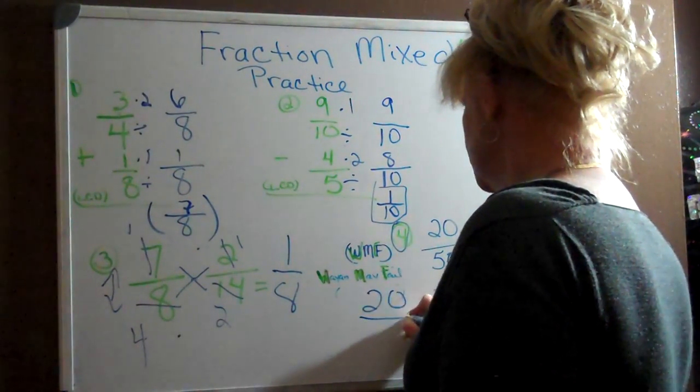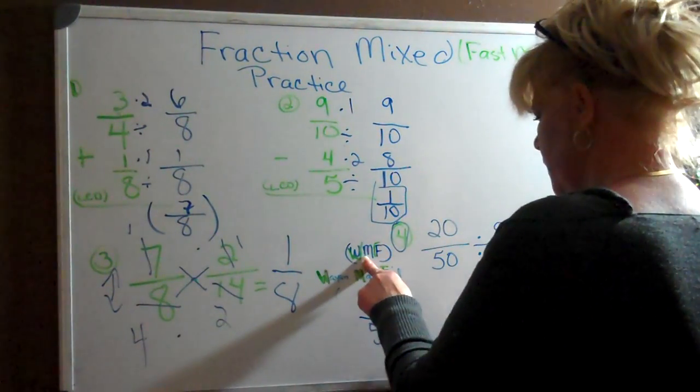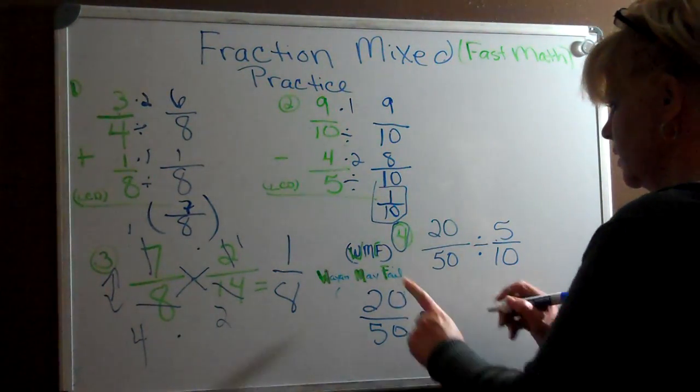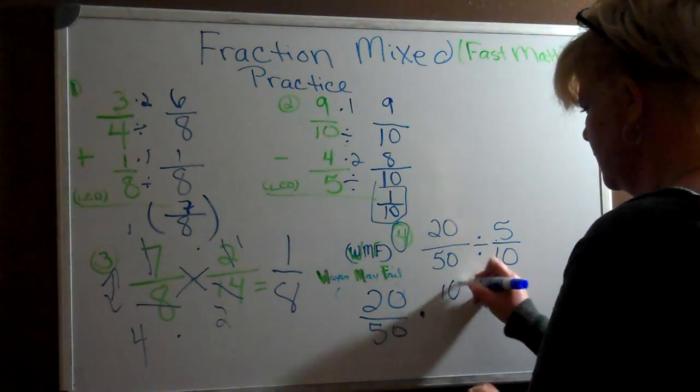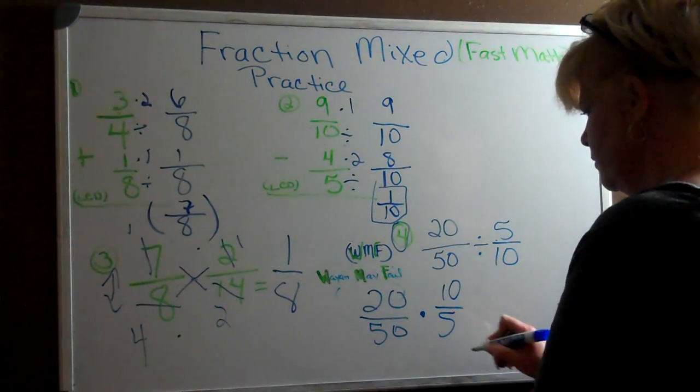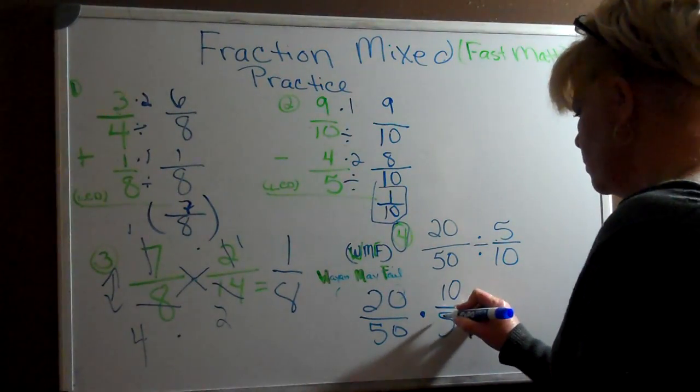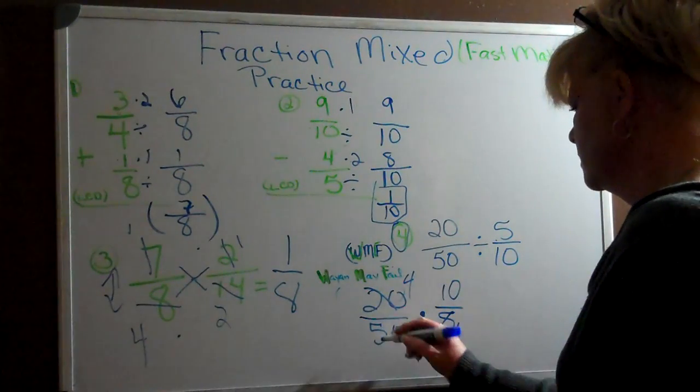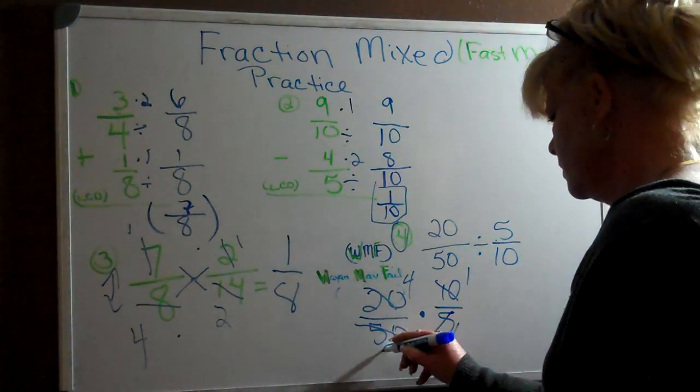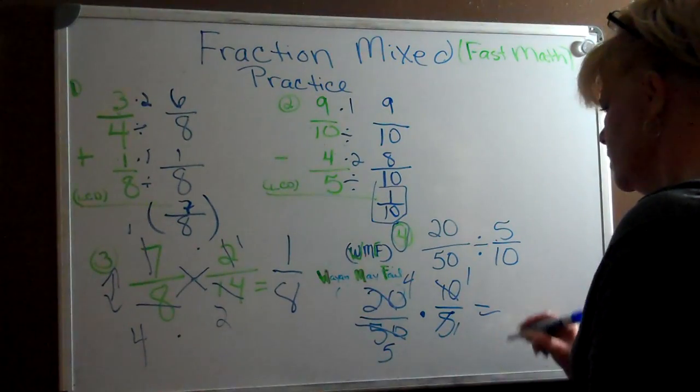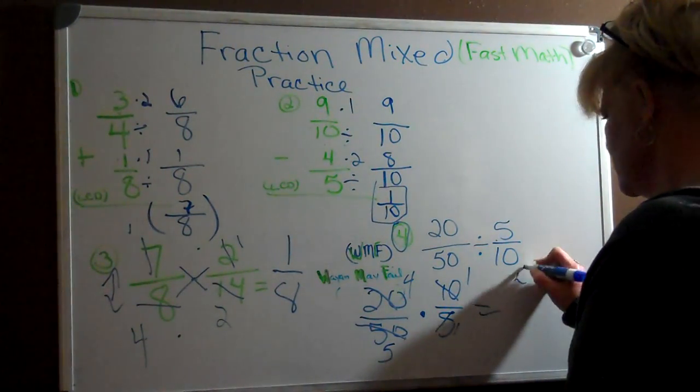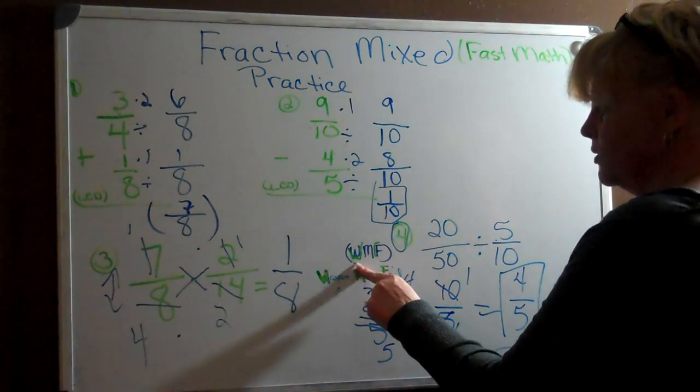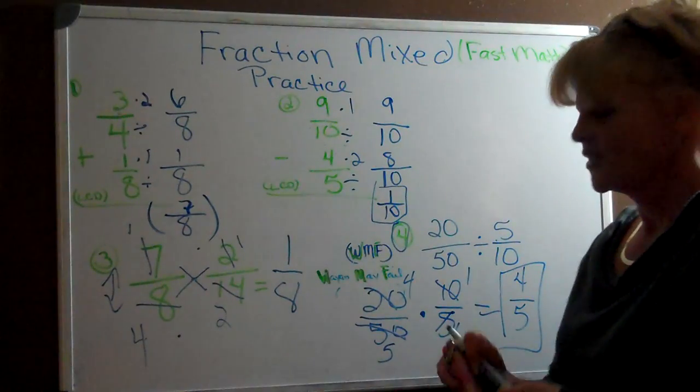Start to write it out, 20 over 50, multiply, change it to multiply here. M stands for that, and then we're going to flip the second one, which is going to be 10 over 5. Then we need to reduce it, so 5 will go into 5 once, and 5 will go into 20 four times. 10 will go into 10 once, and 10 will go into 50 five times. All you do now is you multiply it across, and it was that simple. So remember the WMF. All right.